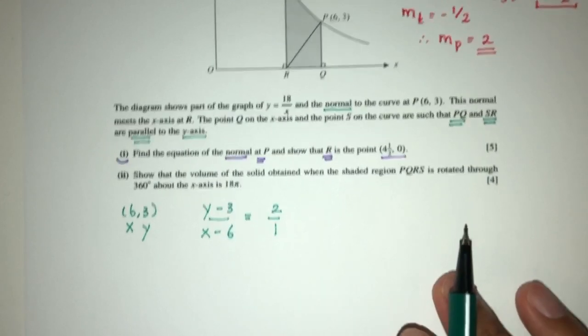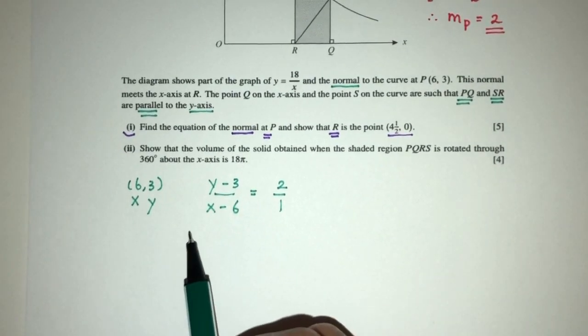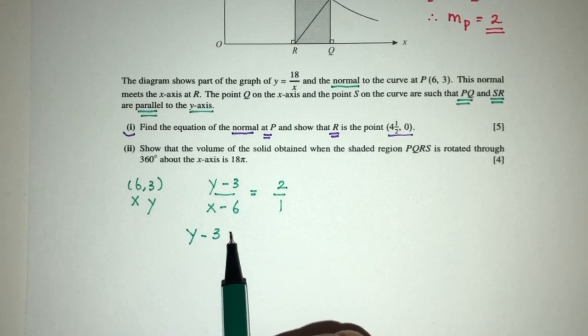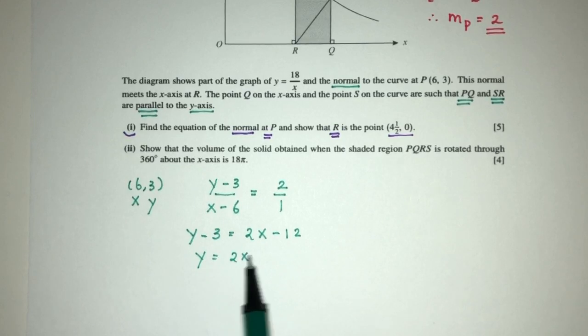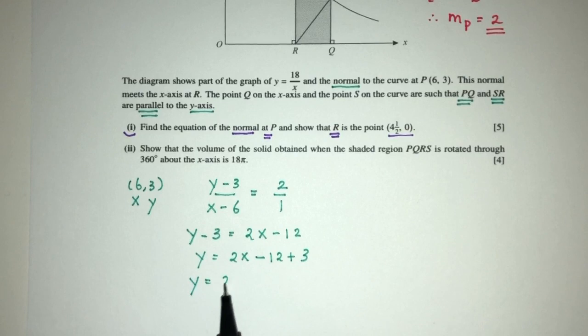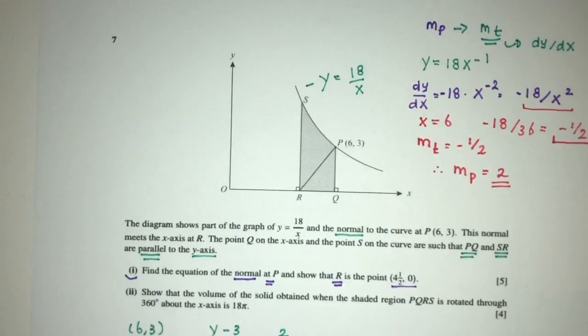Now we just cross multiply. You will have y minus 3 equals 2x minus 12. So y will be 2x minus 12 plus 3. That will be y equals 2x minus 9. This will be the equation of the normal at P.